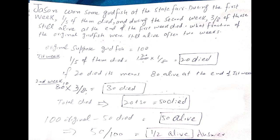The first week is 1/5. The first week 20 died. The remainder is 80. Then 80 multiplied by 3/8 equals 30. The total died is 50. The original was 100. So 50 died means 50 survived.